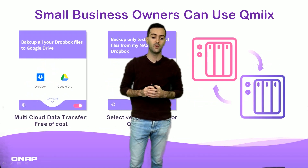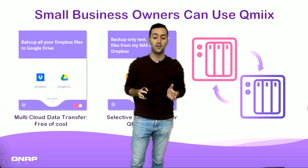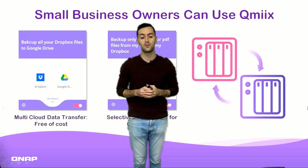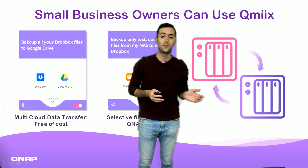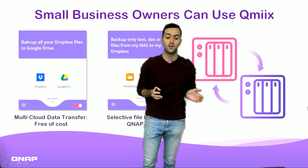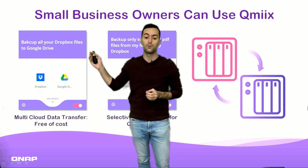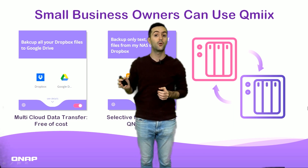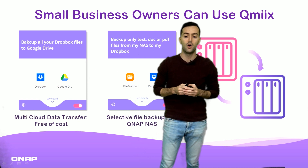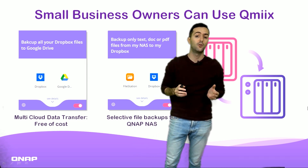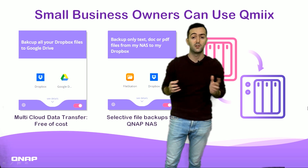This is very useful especially for small business owners. They can use QMix to back up all data from one cloud service to another — for example, backing up all your Dropbox files to Google Drive automatically once you create a mix, or backing up only text, documents, and PDF files from your NAS to your Dropbox and vice versa.